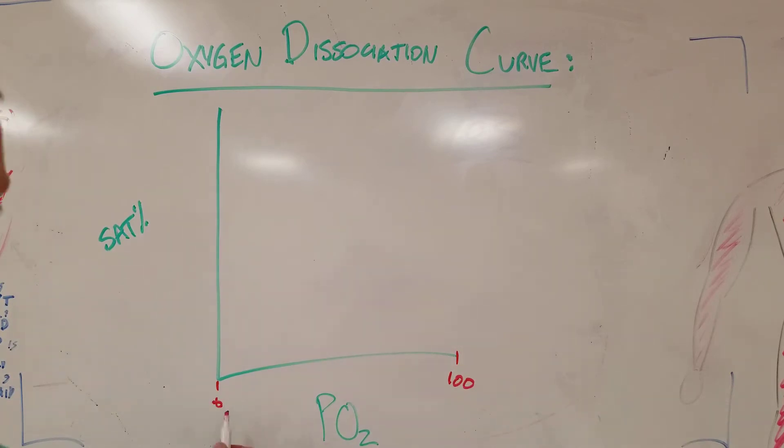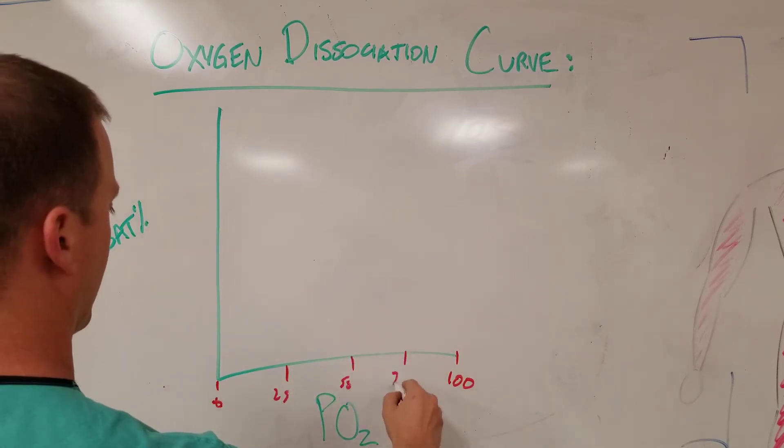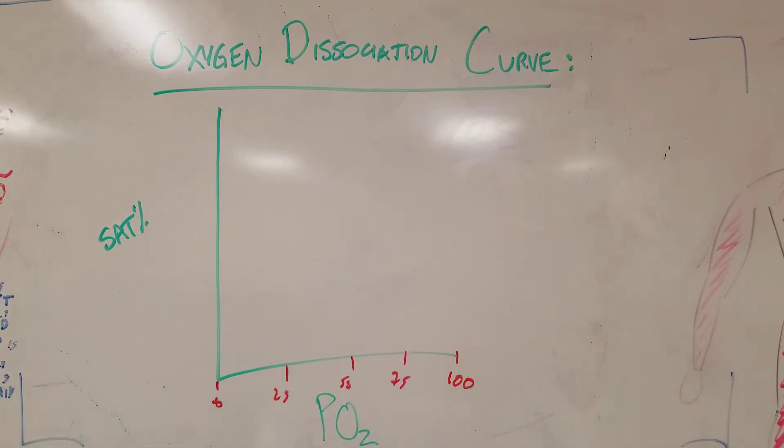And what this is saying is, at a certain partial pressure, so at 25, at 50, at 75, what amount of hemoglobin will be bound to an oxygen molecule?